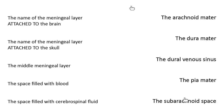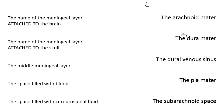One of the things we talked about last week in the context of the brain is what are called the meninges, which are the connective tissue layers surrounding the brain, keeping it safe. There are three meningeal layers. All of them end with the word mater — mater means mother. So we have three of them: the arachnoid mater, dura mater, and the pia mater.